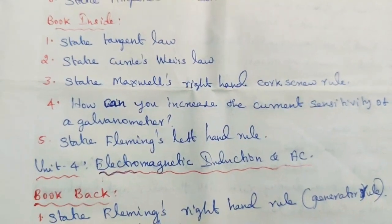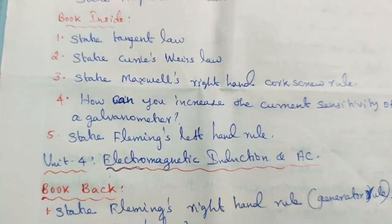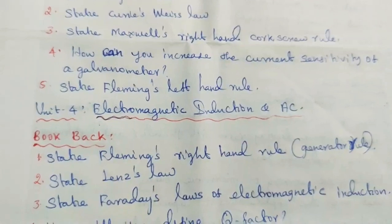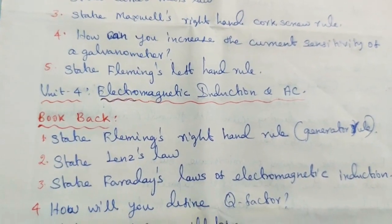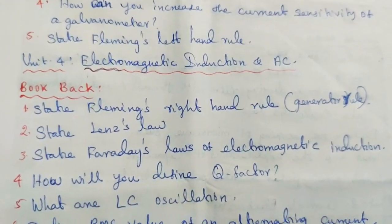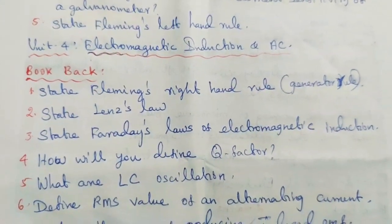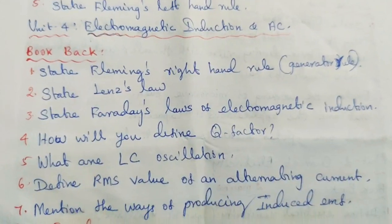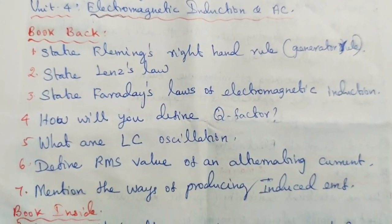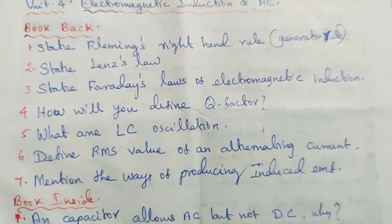Unit 4: Electromagnetic Induction and Alternating Current. Book back questions: State Fleming's right-hand rule or generator rule. State Lenz's law. State Faraday's laws of electromagnetic induction. How will you define Q factor? What are LC oscillations? Define RMS value of an alternating current. Mention the ways of producing induced EMF.